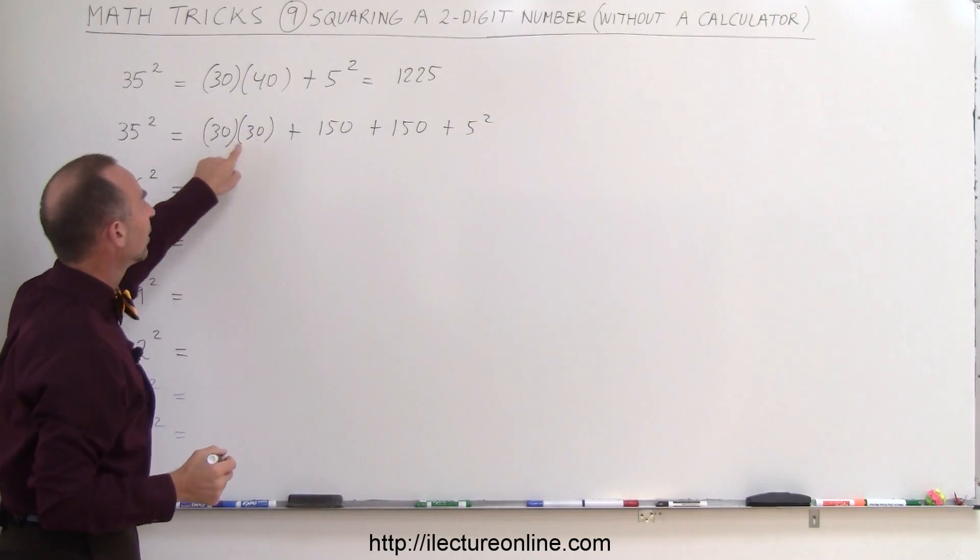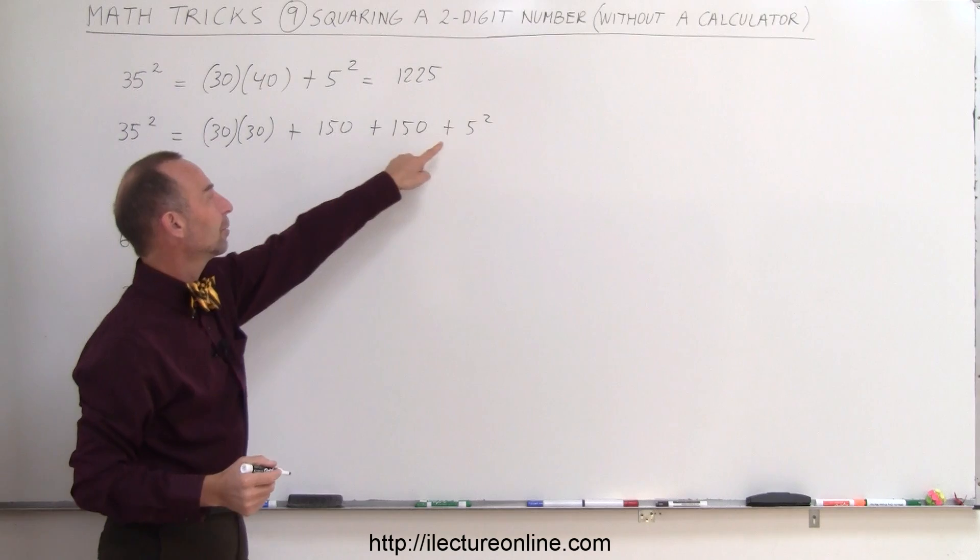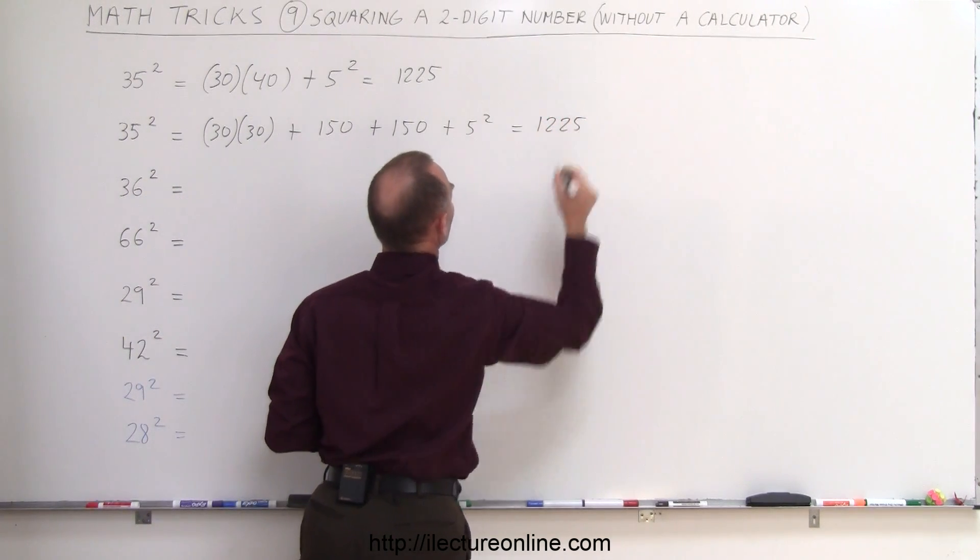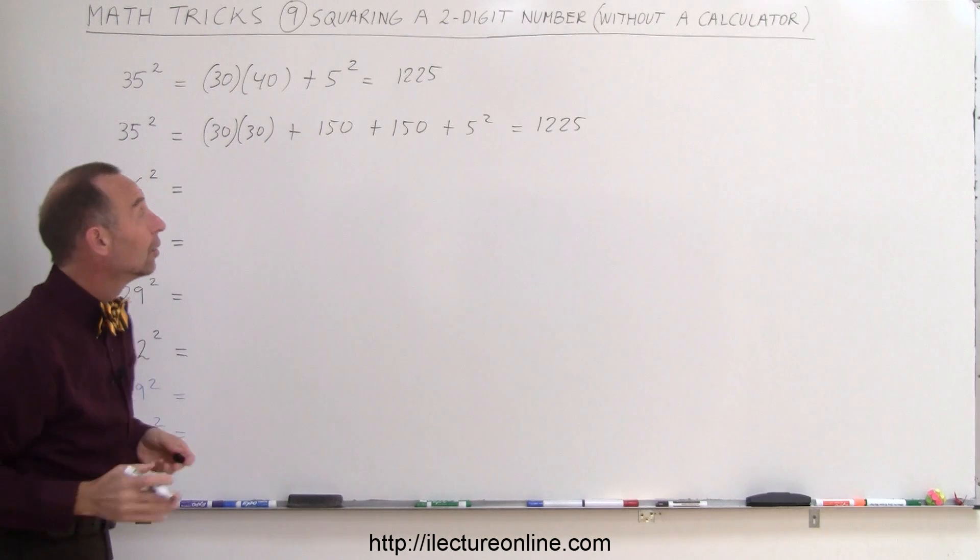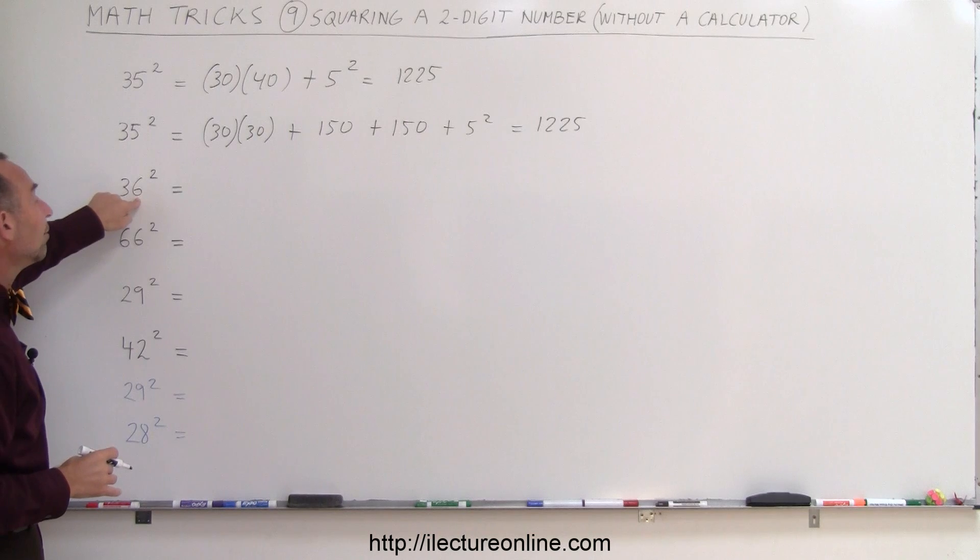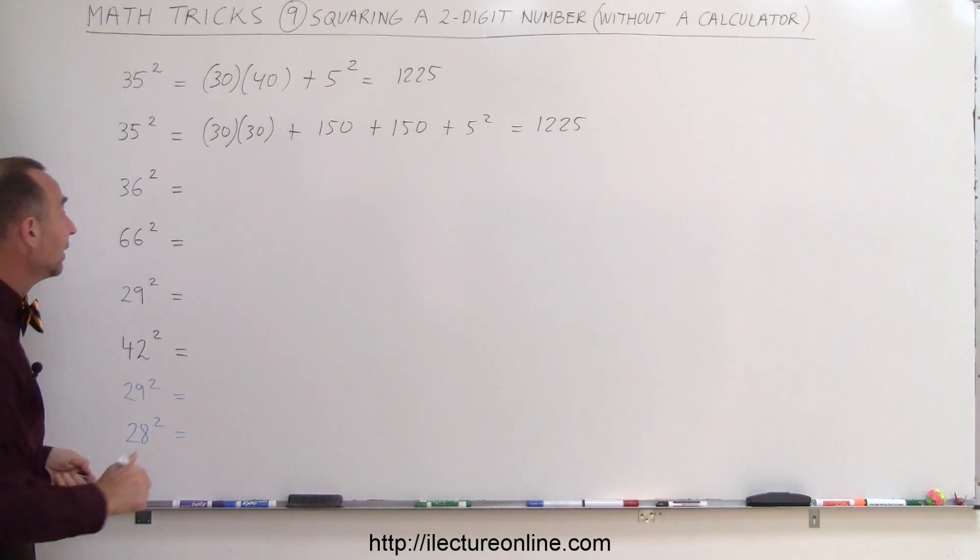And so you go 900, plus 300 is 1200, plus 5 squared is 1225, so that would be 1225. So that's how you do it in a more general sense, and since we now have a number that doesn't end in a 5, let's see how that works for a number like that.